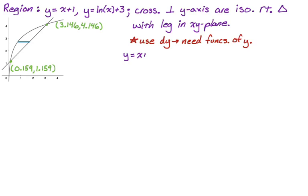So the first one, y equals x plus 1, definitely the easiest one. That's x equals y minus 1.